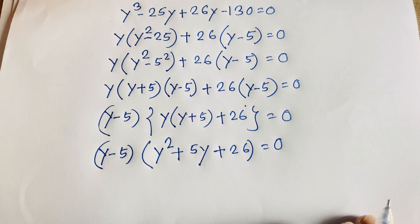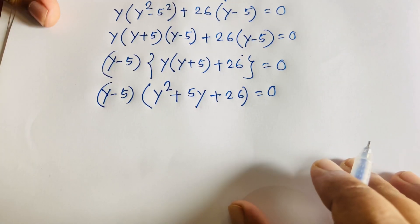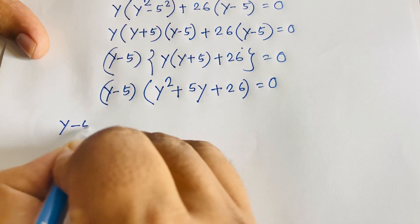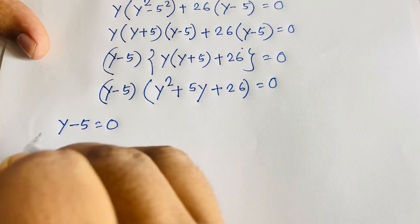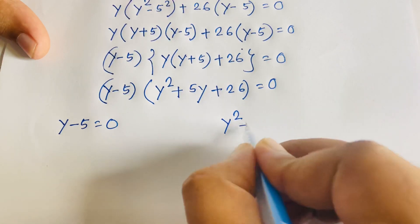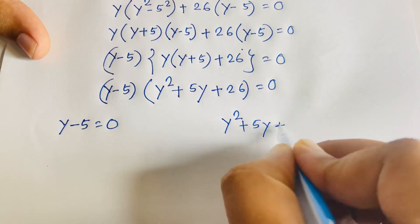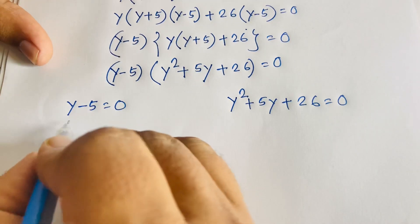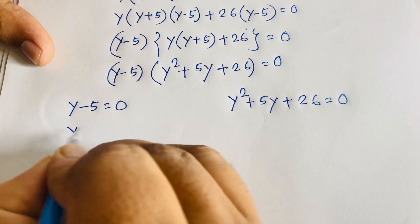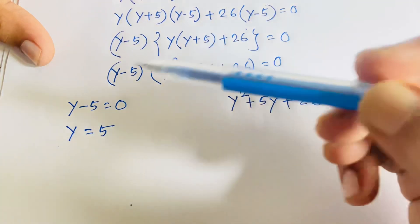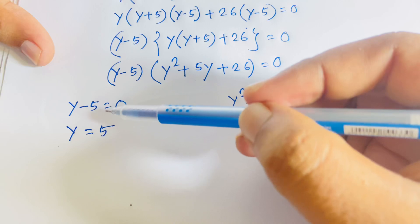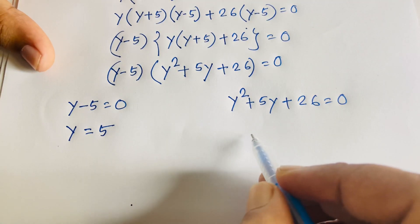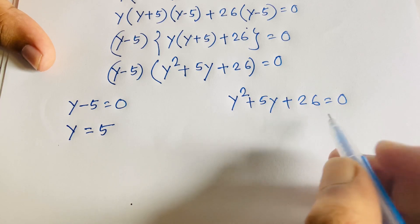We now have two cases. Case 1: y − 5 = 0, giving y = 5. Case 2: y² + 5y + 26 = 0. Adding 5 to both sides in case 1 gives y = 5.